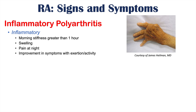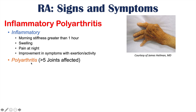Polyarthritis — breaking down the word: poly means many, arth refers to joints, and itis refers to inflammation. So it is inflammation of many joints, and more specifically, inflammation of at least five joints. It most commonly affects the small joints of the hands and feet.